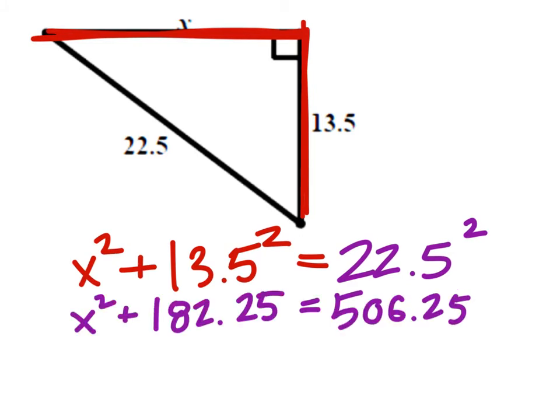All right, so that's what we get after we square those numbers. To solve for x squared, we would need to now get rid of that 182.25. So, we're going to subtract 182.25 from both sides, like this.